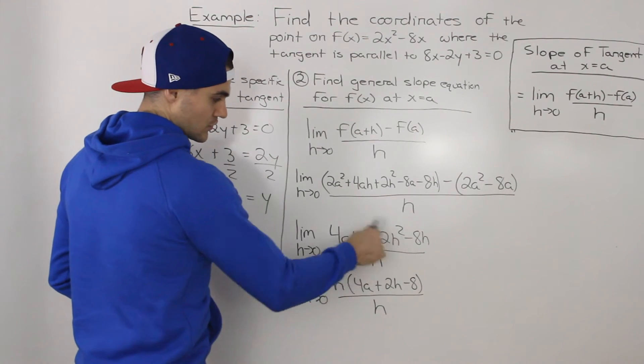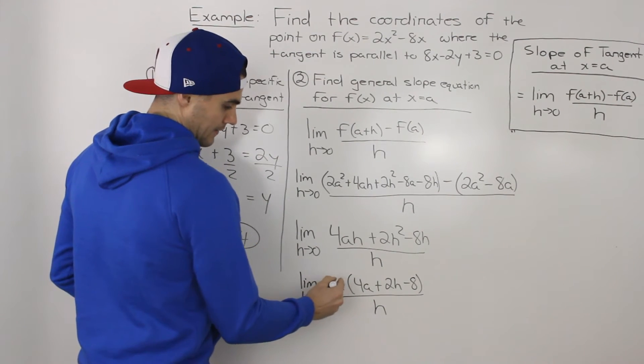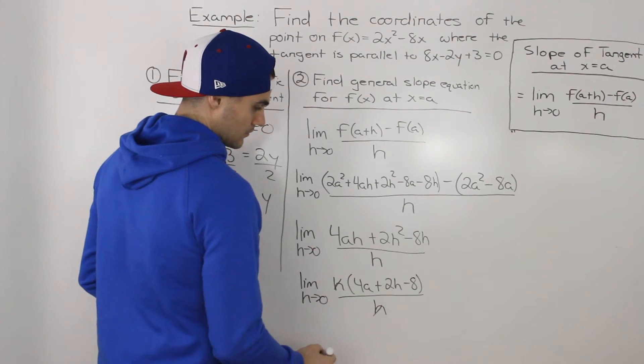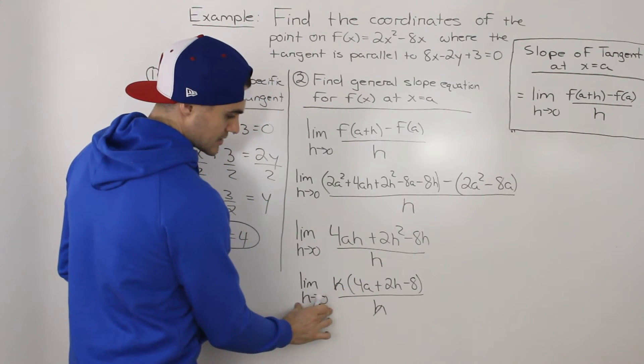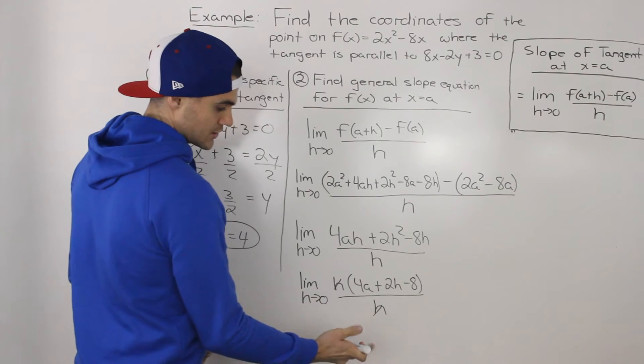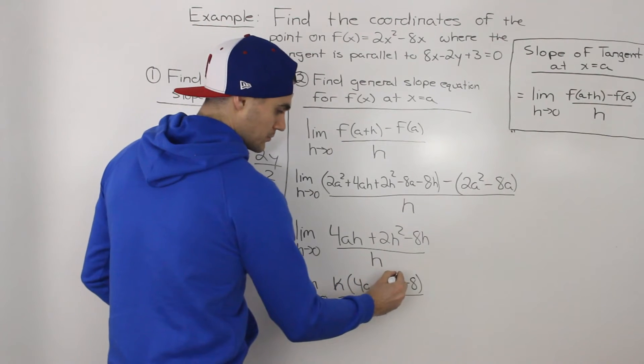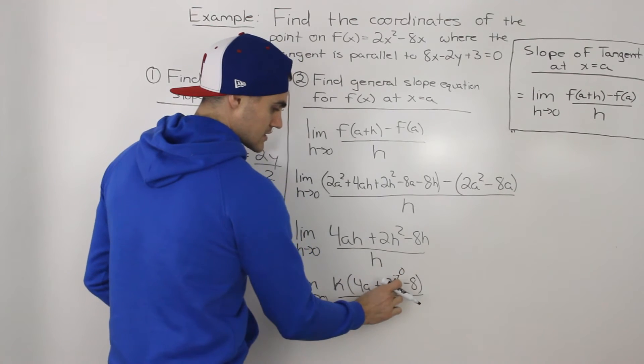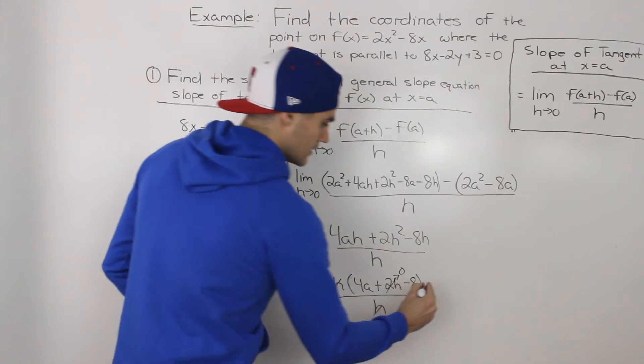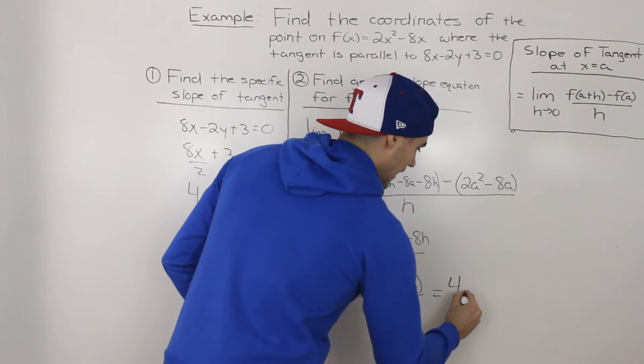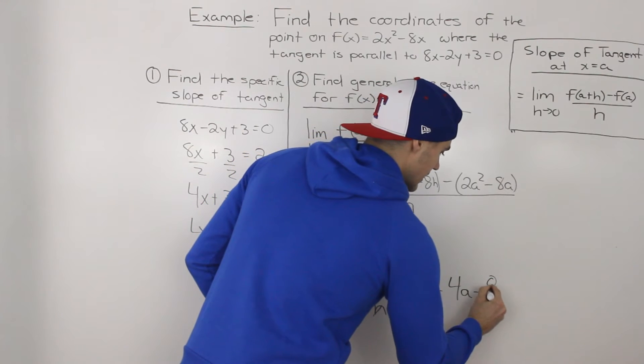So we would factor out an h from the numerator, and then notice how the h's cancel out. And now we're just left with the limit as h goes to 0 of this expression in the brackets, 4a + 2h - 8. So we could plug in 0 for h, this 2h goes to 0, so we're just left with 4a - 8.